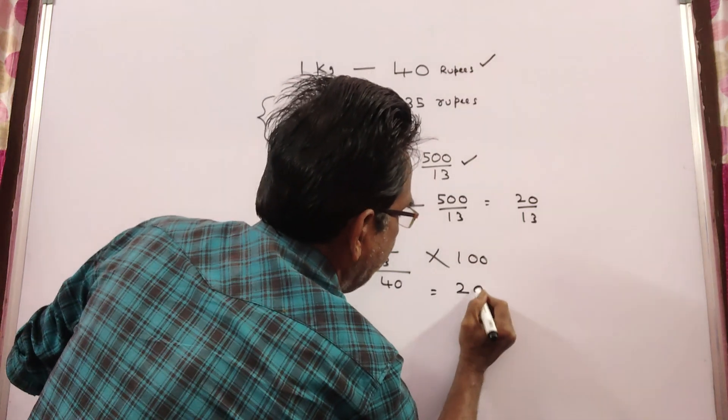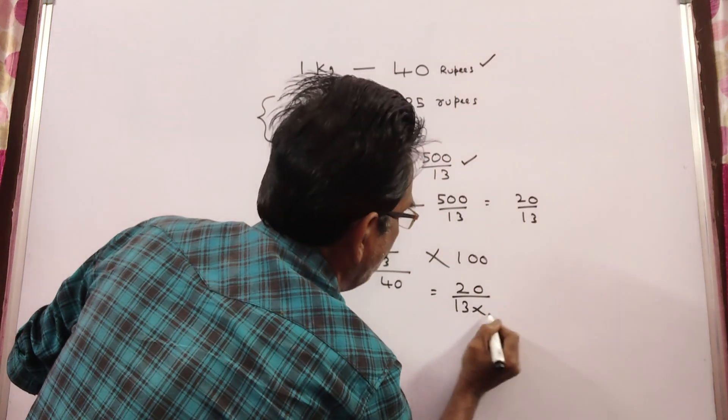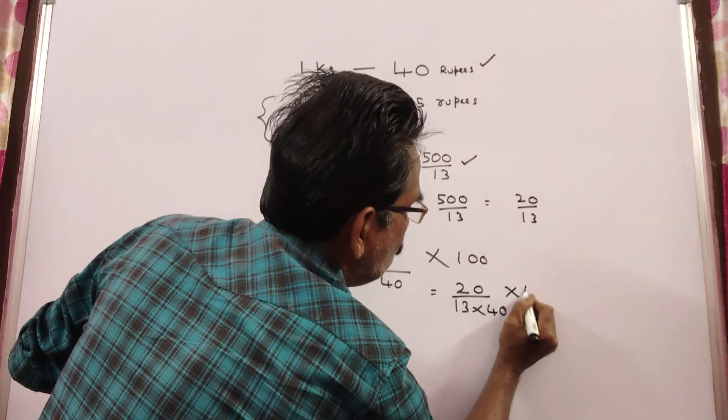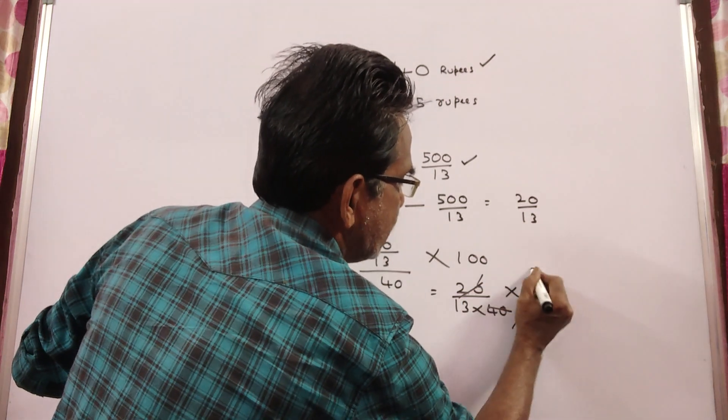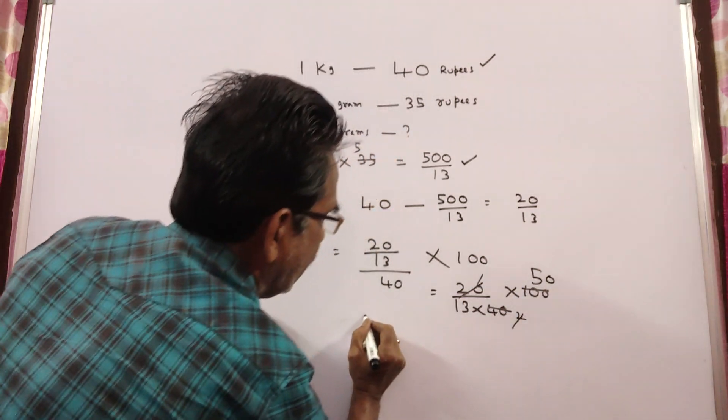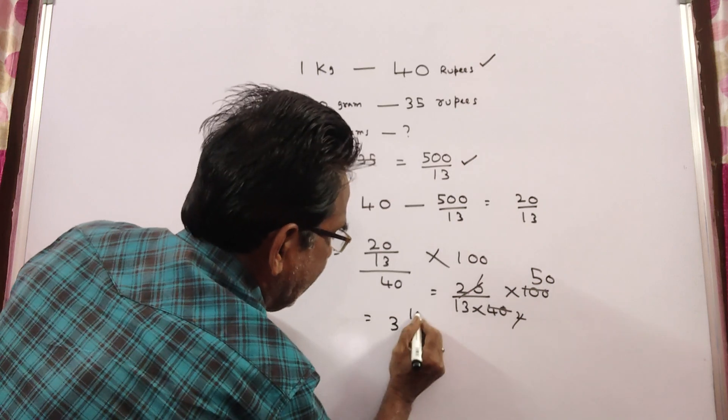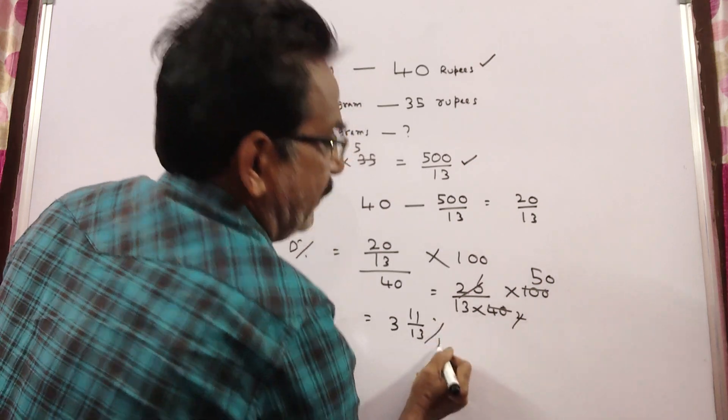This is equal to 20 by 13 divided by 40 into 100. This simplifies to 50 by 13. 50 by 13 means 13 into 3 is 39, giving us 3 and 11 by 13.